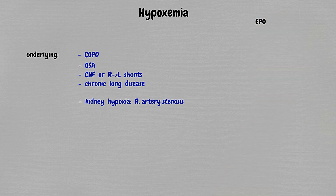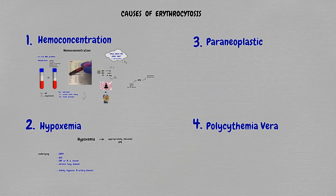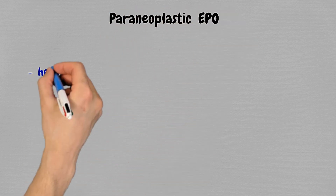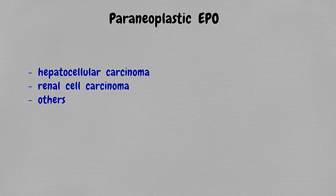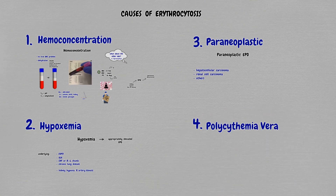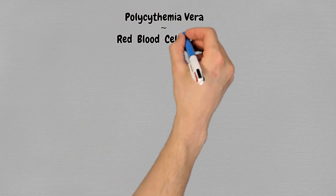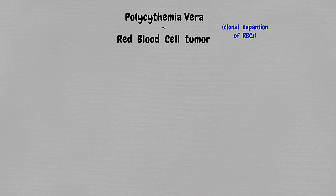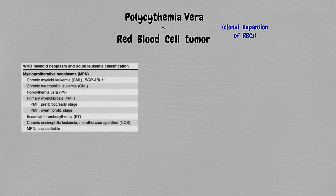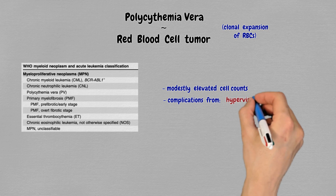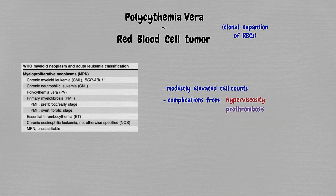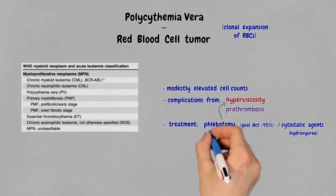Since we talked about EPO, let's go to our third cause. In hypoxemia, EPO is appropriately elevated, but you can also have excess EPO paraneoplastically. Paraneoplastic EPO secretion usually comes from kidney or liver cancers. The final cause — and also the most specific — is, at last, polycythemia vera. This is simply a red blood cell tumor, a clonal neoplastic expansion of red blood cells. It behaves similarly to a chronic leukemia, with modestly elevated cell counts, not fulminant like acute leukemia. The main problems come from hyperviscosity and a tendency to form clots. Treatment involves reducing the red cell mass by phlebotomy or pharmacologically, plus aspirin to prevent thrombosis.